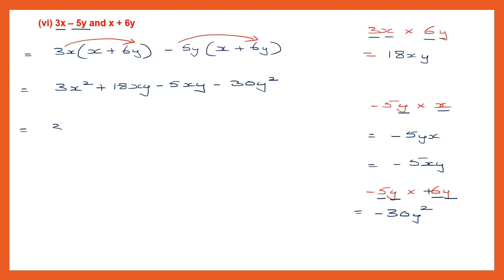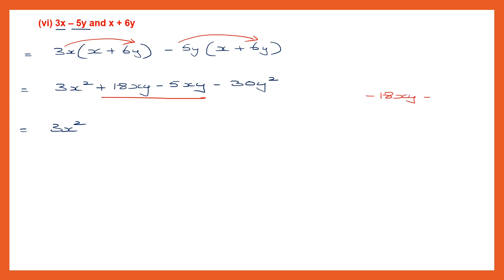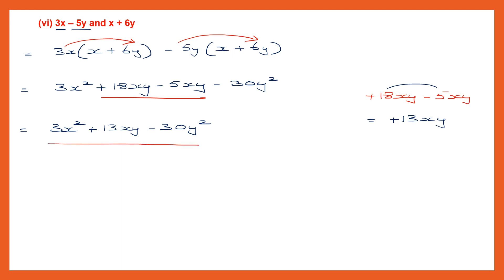Let's write down the answer. 3x square, and here we have plus 18xy and minus 5xy. Signs are different, so put the sign of the bigger number and subtract: 18 minus 5 is 13, giving plus 13xy. Remember this is addition, not multiplication, so I have not multiplied the signs. Then we have minus 30y square. Final answer: 3x square plus 13xy minus 30y square.